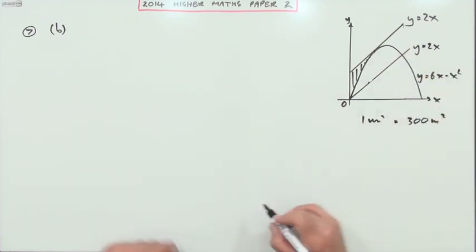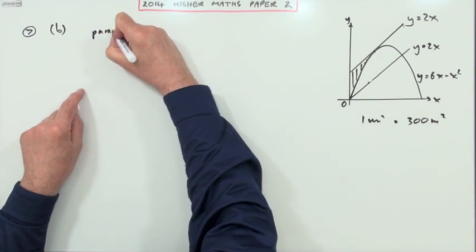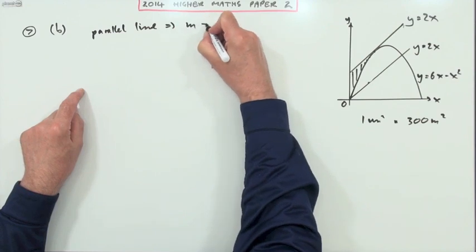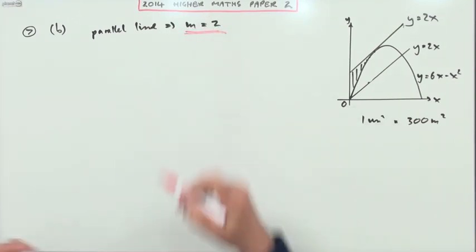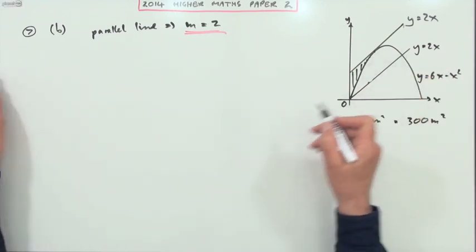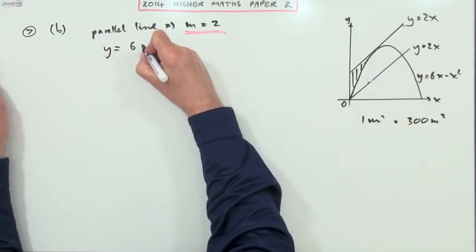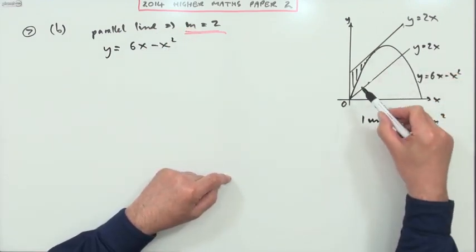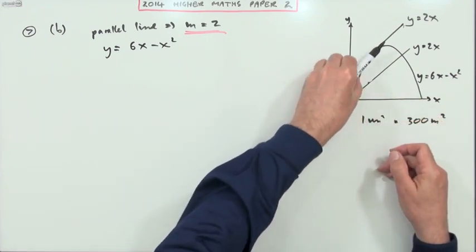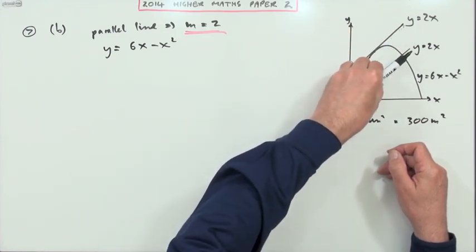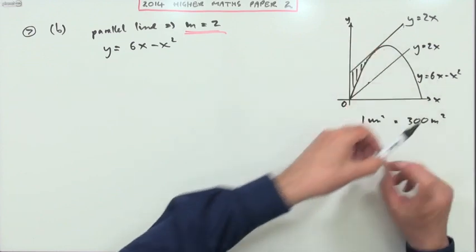If it's a parallel line, that means the gradient is 2. So on this curve, I'm looking for the equation of a tangent to the curve where I know the gradient. I've got this y equals 6x minus x squared, that's the equation of this parabola. The gradient is different at all the points along this parabola. I want to find the point in this parabola where the tangent is parallel to this line, where the tangent has a gradient of 2. So I'll need gradients. Well, the gradient is given by dy/dx. Differentiate it, that will be 6 minus 2x.